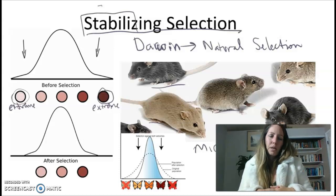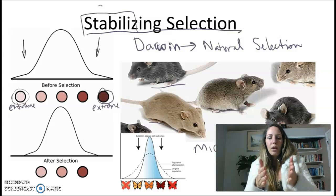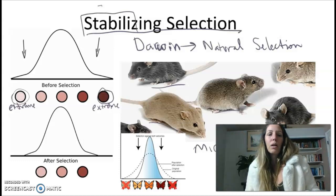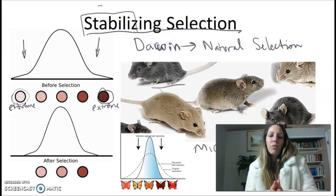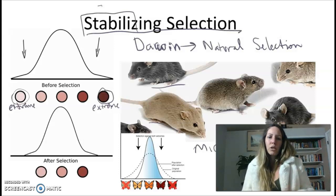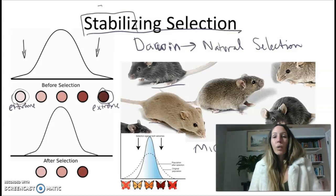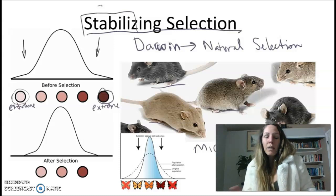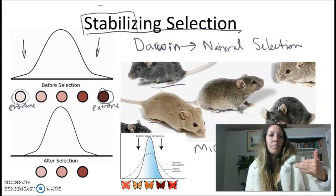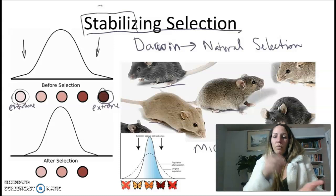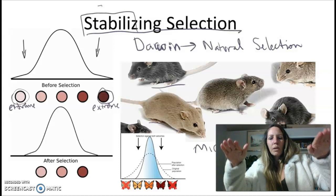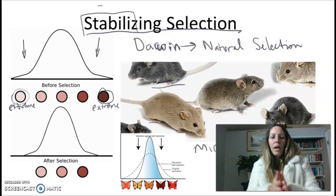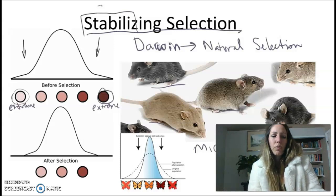Stabilizing selection is the opposite. With stabilizing selection, we actually squeeze the graph in, which means both sides decline. So instead of being extreme white and extreme dark green, we're now all yellow — only the yellow survive. This is a classic example of natural selection, where only one specific type of color is surviving in that specific environment. Stabilizing means the extremes on both sides decrease, and only the middle — the intermediate — survives.